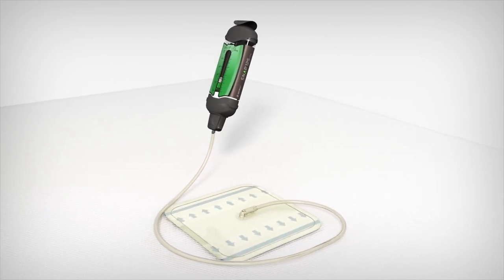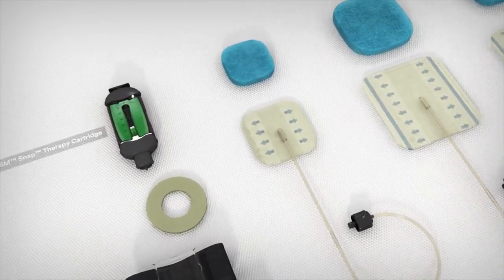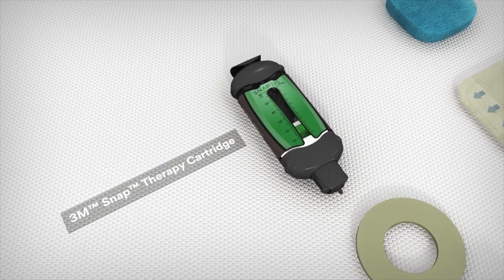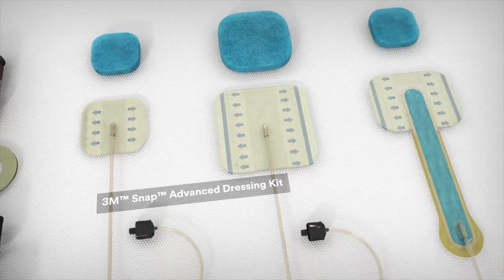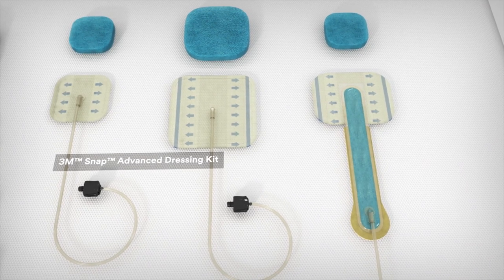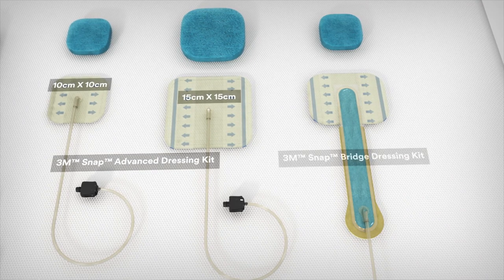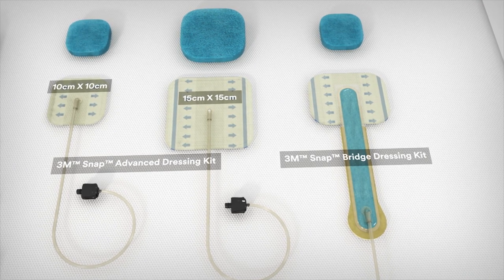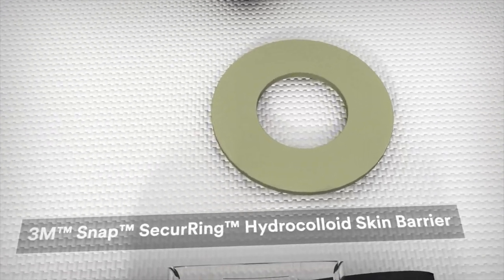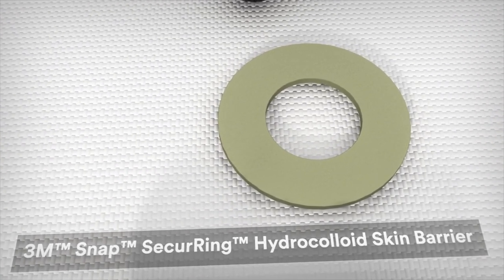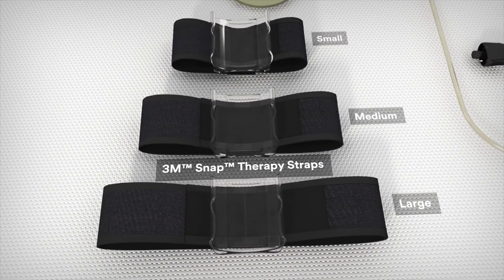SNAP therapy is also easy to apply. Before beginning, select the 3M SNAP therapy cartridge and the 3M SNAP dressing kit you feel is most appropriate for your patient. The 3M SNAP advanced dressing kits are available in a variety of sizes, including 10 x 10 cm, 15 x 15 cm, and the 3M SNAP bridge dressing kit. The 3M SNAP securing hydrocolloid skin barrier may be utilized to help create a seal. 3M SNAP therapy straps are available in three sizes.